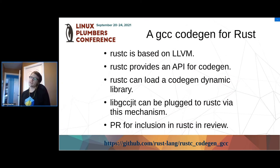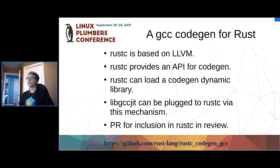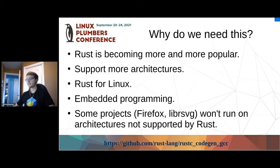The Rust compiler is currently based on LLVM, which means it does not support all the architectures supported by GCC. However, it provides an API to have a different codegen — that's what is used for instance with Cranelift, a backend written in Rust. This project loads a dynamic library for the codegen, leveraging libgccjit plugged into the Rust compiler as a standard library. There is currently a pull request for inclusion in the Rust compiler itself that is in review.